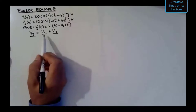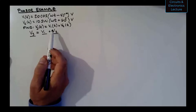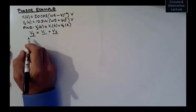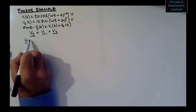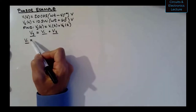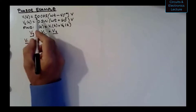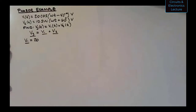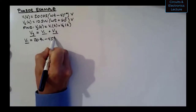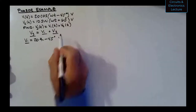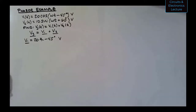Phasors are just vectors — they start at the origin and extend to some point expressed in Cartesian, polar, or exponential form. Let me represent these phasors on the complex plane. Converting V1 to polar phasor form: the magnitude equals the cosine amplitude, which is 20, and the angle equals the phase of the cosine, which is −45°. So V1 phasor = 20∠−45° volts.